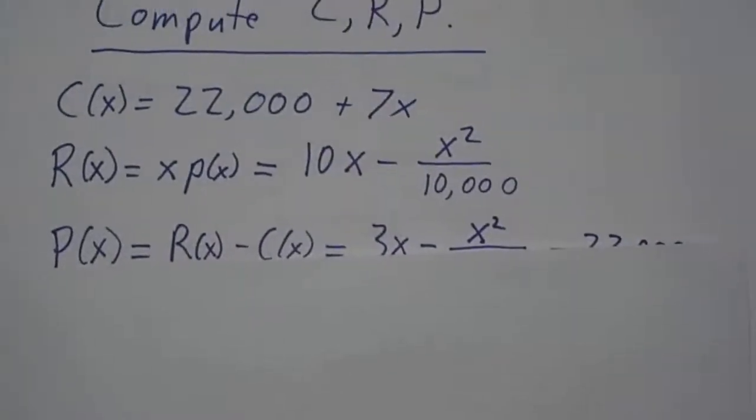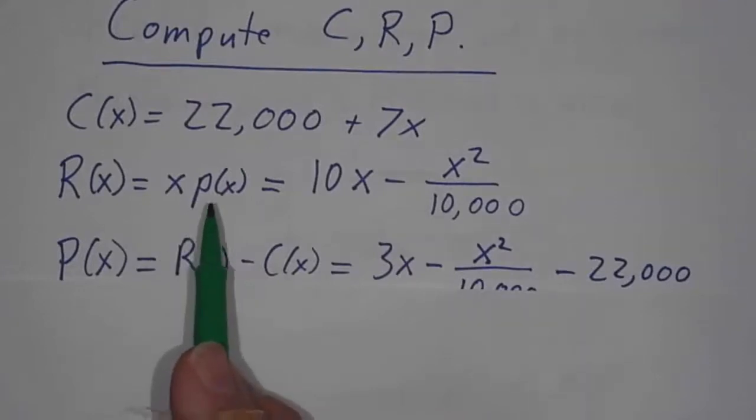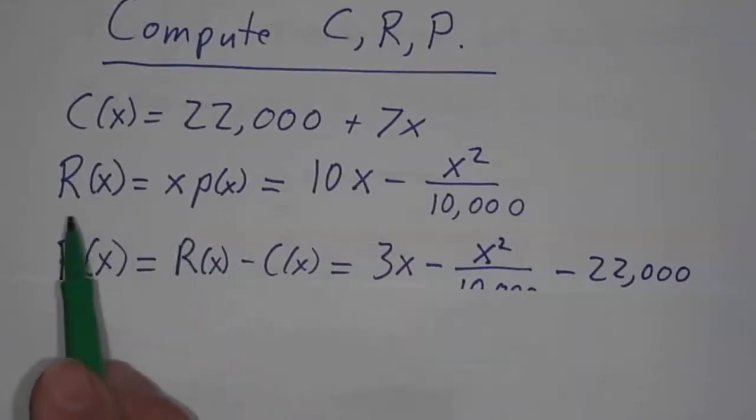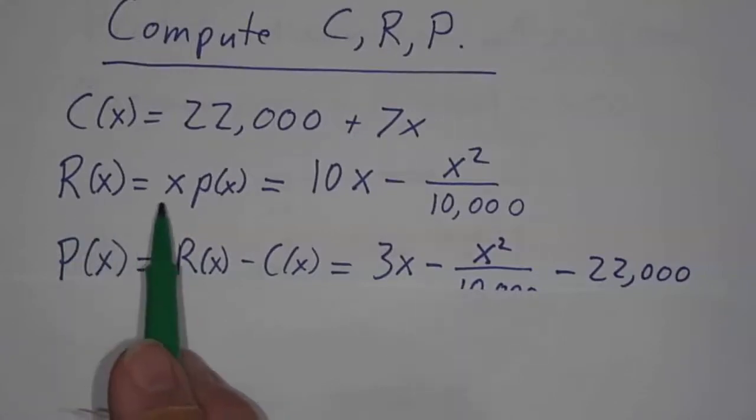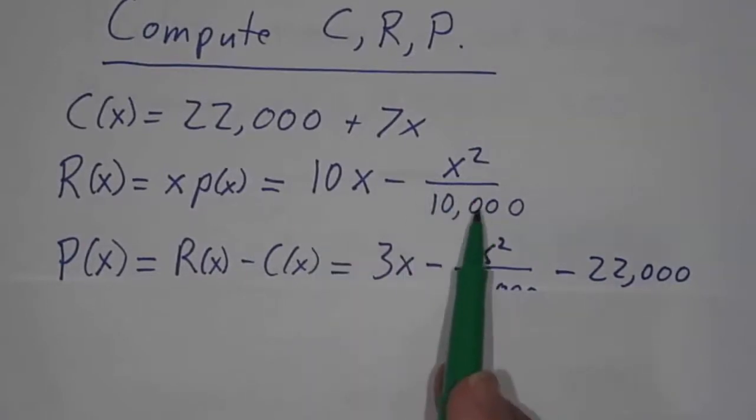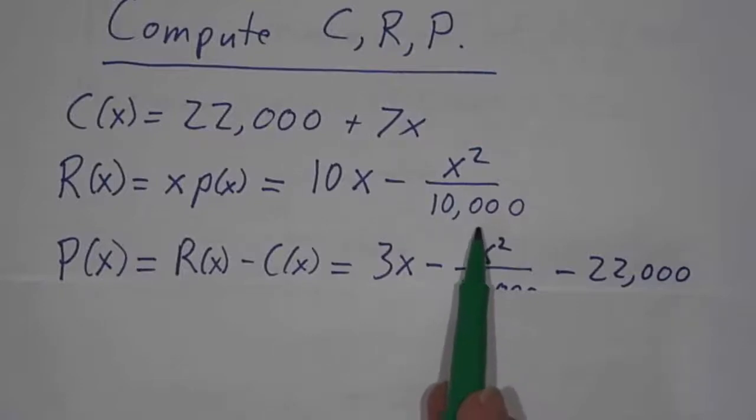So the first thing you do is you figure out what the costs are. Well, we already knew the costs, and we knew the price. And if you take the price and multiply by the number of things you sell, that's your revenue. Revenue is number of items times price. And so, since the price was 10 minus X over 10,000, the revenue is 10X minus X squared over 10,000.